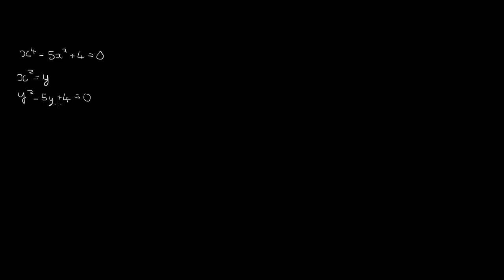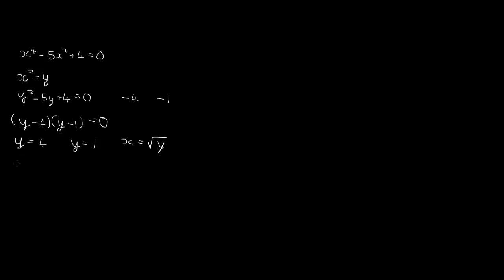We'll see if that factorises — yes it does — and we can use minus 4 and minus 1. So we factor that expression and we get Y minus 4 times Y minus 1 equals 0, which gives us Y equals 4 or Y equals 1. But we know from our original substitution that X equals the square root of Y, so that gives us X equals plus or minus 2, or X equals plus or minus 1.